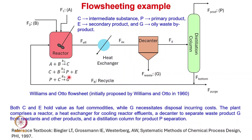The entire effluent from the reactor is charged to the heat exchanger where heat is removed, and this cooled effluent is then charged to the decanter. In the decanter, the waste byproduct G is completely removed, and the remaining products are charged to the distillation column where the desired product P is separated as distillate. The bottom product forms an azeotropic mixture, so around 10% of product P with respect to component E is removed at the bottom.